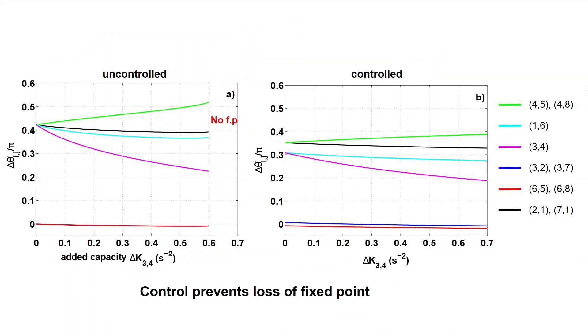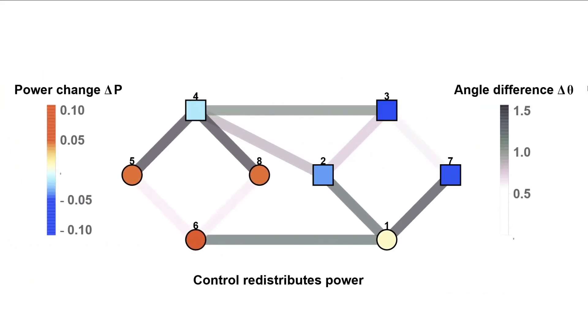Contrary, adding control guarantees stable operation for any line extensions. The control effectively redistributes the power within the grid.